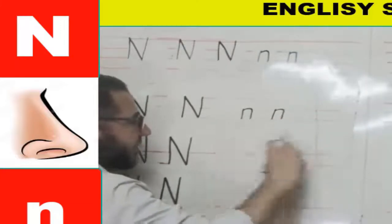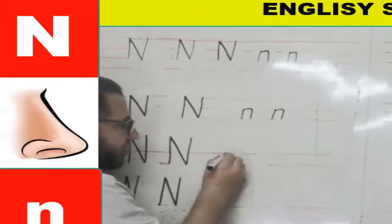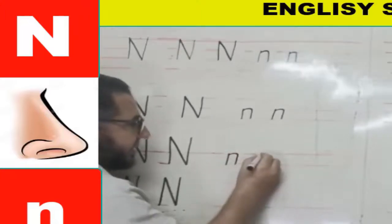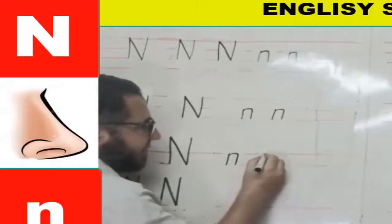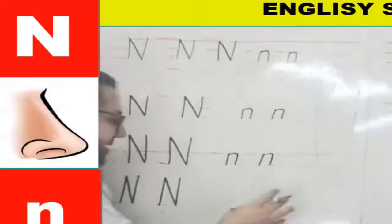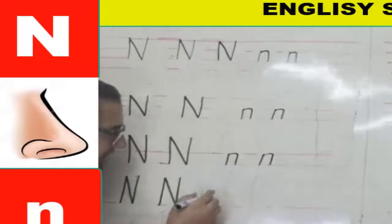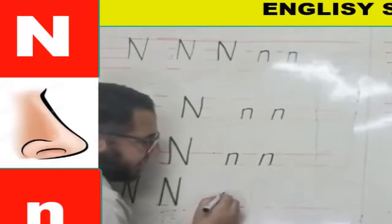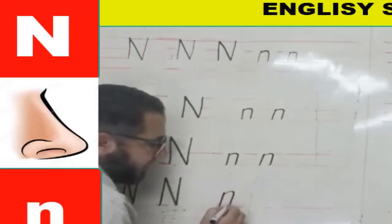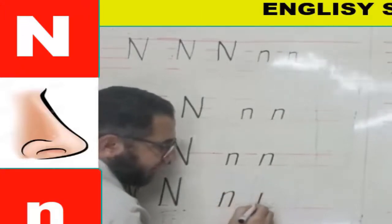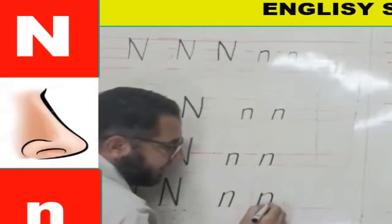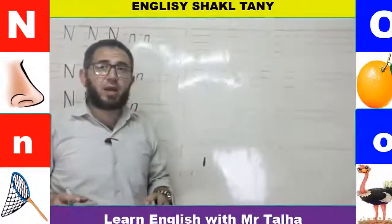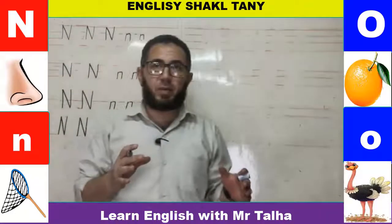On two lines, the small n sits between the two lines: straight down, curved, and down. On one line, it sits on the line — straight line, curve it at the top, then go down again. That's lowercase n, and this is the way I write capital N and lowercase n on the lines.